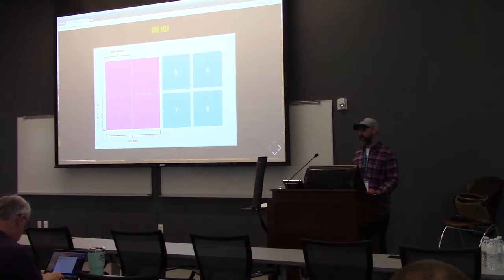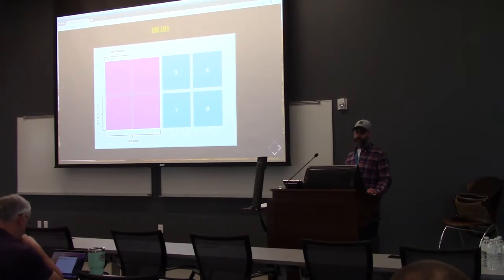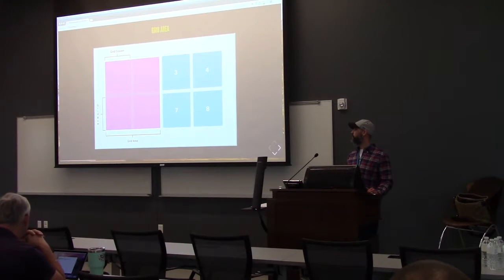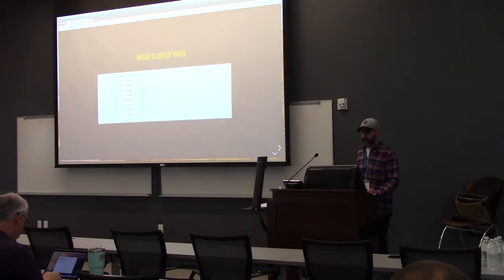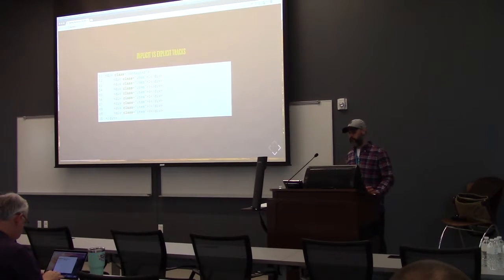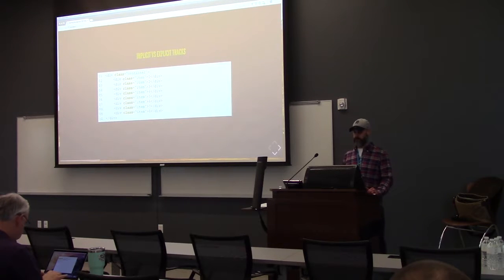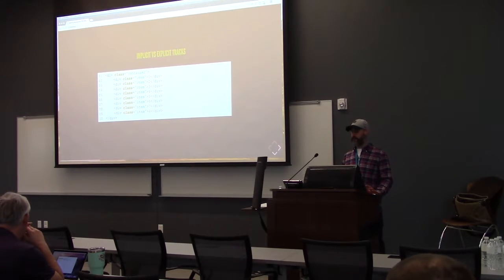A grid area is a rectangular space surrounded by four grid lines. A grid area can contain any number of grid items — here I'm giving you four grid items, but it could be two or it could be one. To understand how implicit and explicit grid tracks work is a fundamental part of understanding CSS Grid.